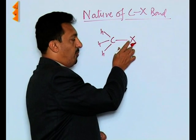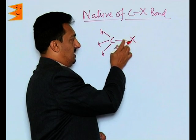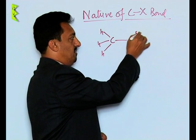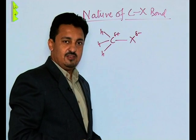This covalent bond, the polar covalent bond—the polarity of this bond depends upon the electronegativity of the halogen.